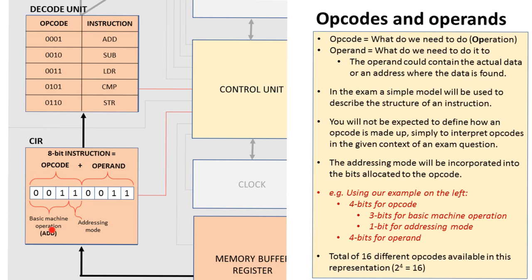So using our example here, we have 4 bits for the opcode. Of which the first 3 are the basic machine operation and the next one is the addressing mode. And the final 4 bits are the operand. So when this instruction is decoded, we look up this sequence here up in this decode unit and we discover that this operation is load.